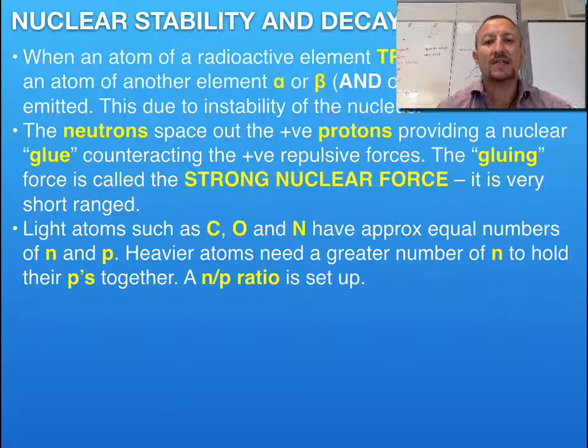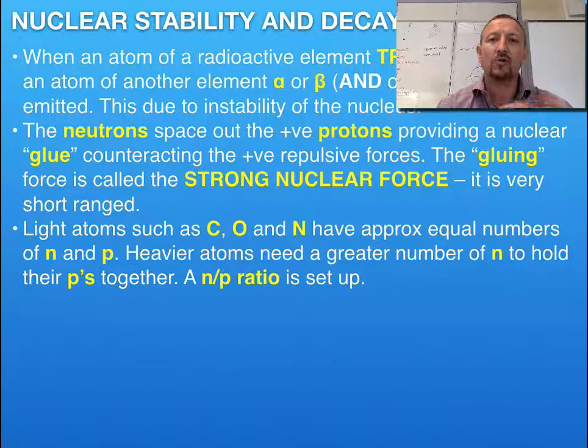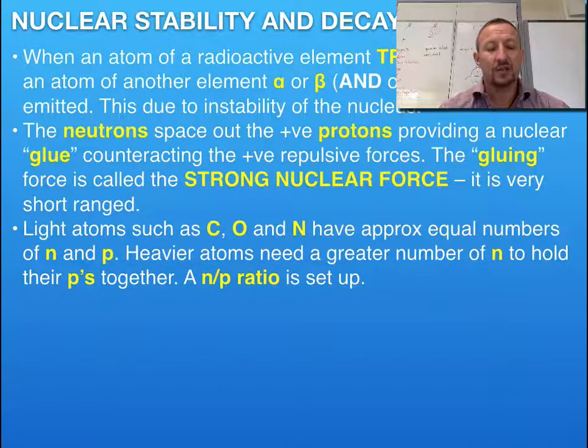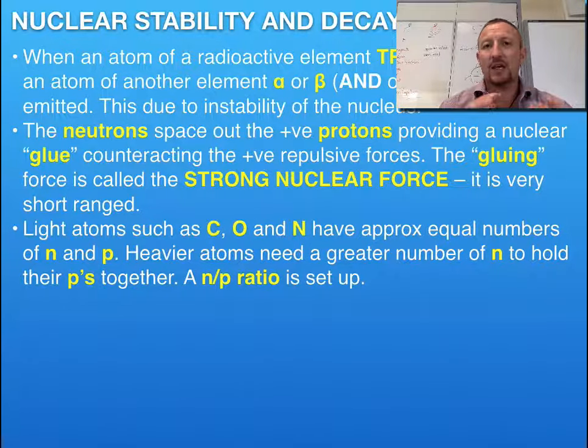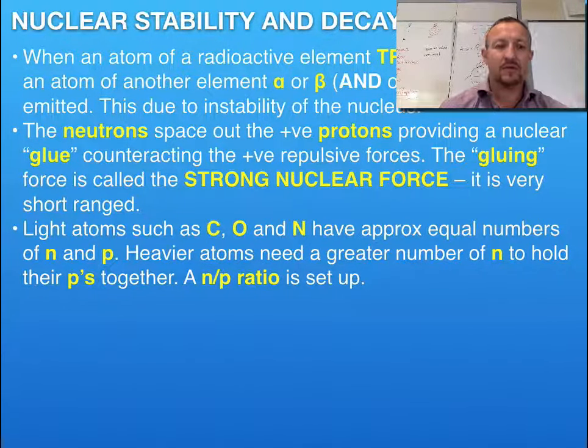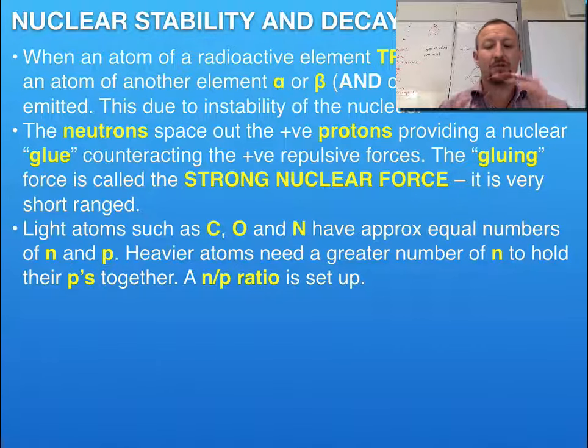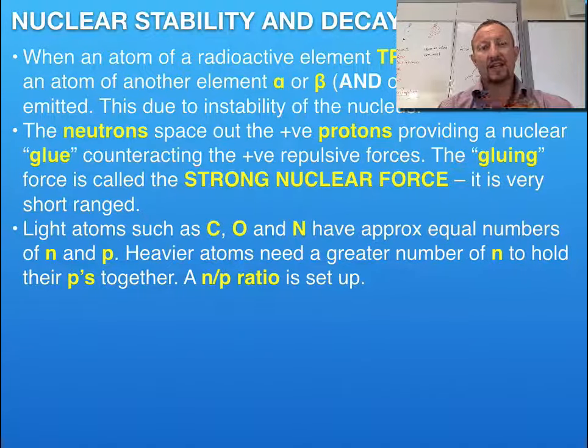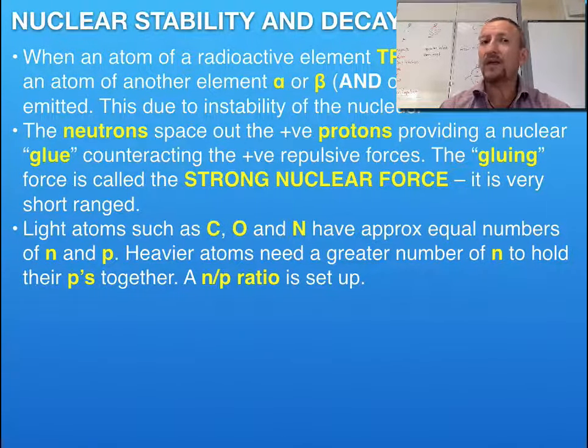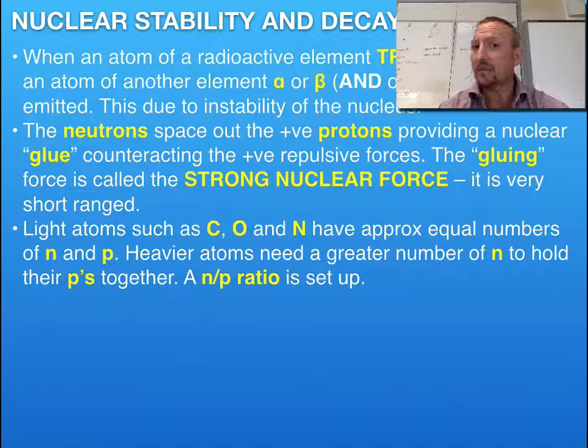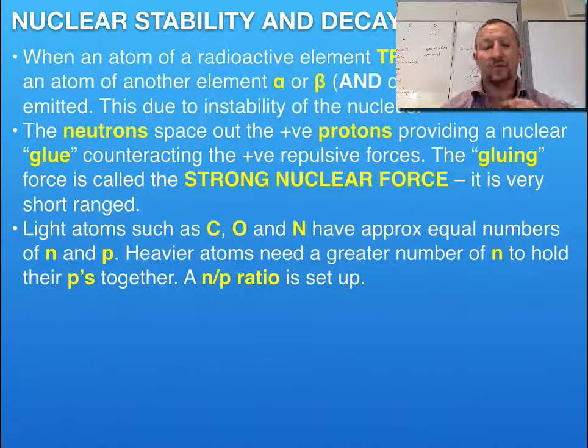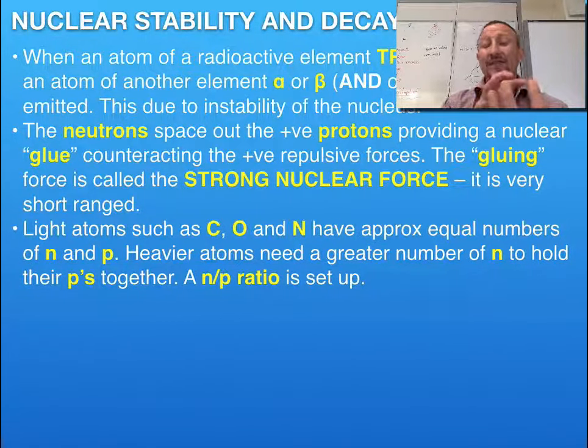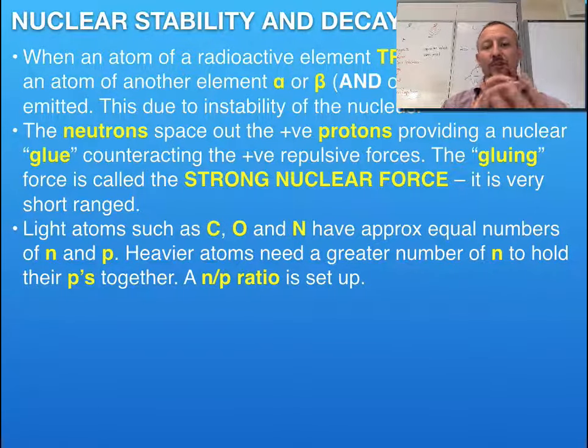So what we can actually determine is that we get a neutron to proton ratio. Now in small particles such as carbon, oxygen and nitrogen, the numbers of neutrons to protons is approximately one to one. So you get equal numbers of neutrons to equal numbers of protons. The result is that they can equally space themselves out. The trouble is when we start getting into some of the larger particles or if we look at the nucleus of isotopes, remember an isotope is an increase in the number of neutrons, we now get an imbalance.